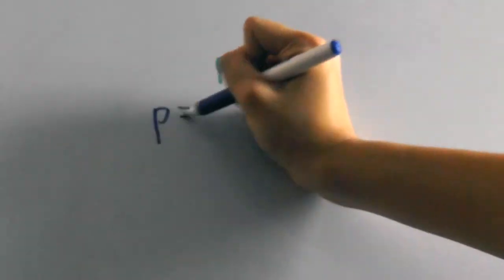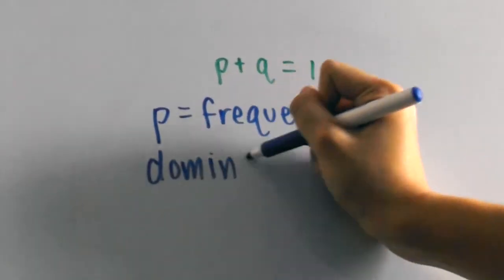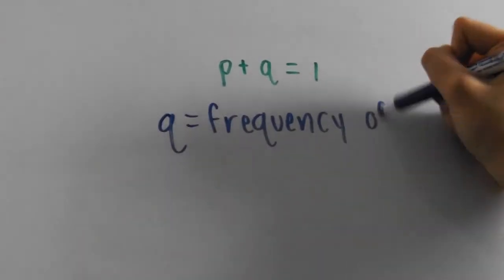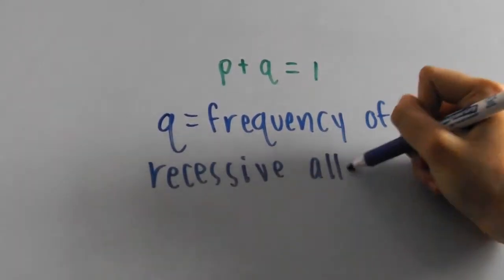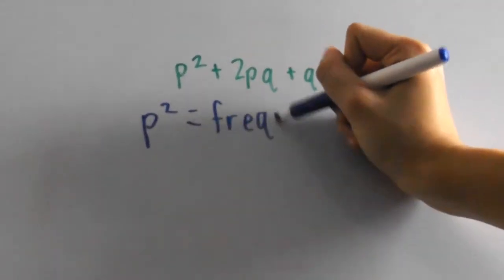Now the variable p stands for the frequency of the dominant allele. On the other hand, q stands for the frequency of the recessive allele. So now that you know that, let's get to this bigger equation over here.